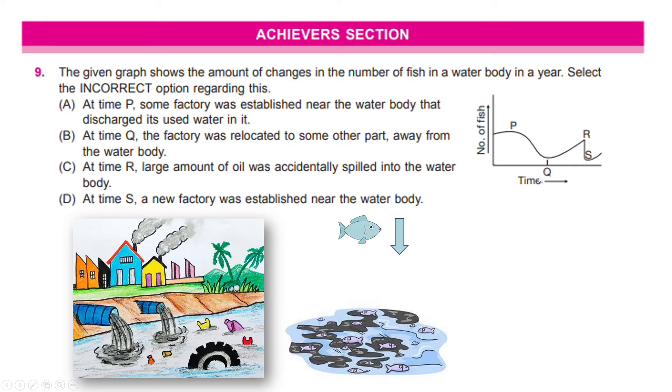B says at the time Q, which is here, the factory was relocated to some other part away from water body. Well, if the factory was not there, the number of fishes should have increased. But in fact, it is lesser down. C says at time R, which is here, where there is a peak in the number of fish, large amount of oil was spilled into the water body. Now, spilling of oil is also equivalent to polluting it. Hence, the fishes should go down. But that has not happened. So, clearly, the last option which says that at time S, a new factory was established near the body, which shows a drop in the number of fish is the right option. I hope you have understood this way of reading a graph and then marking your right answer.